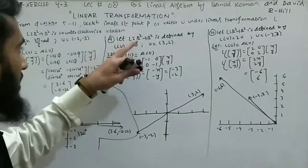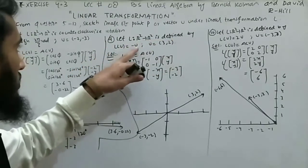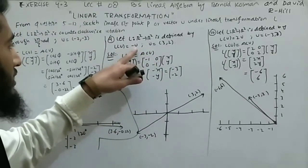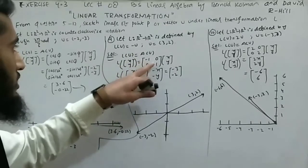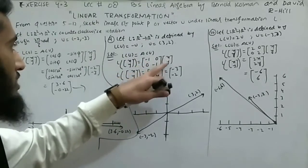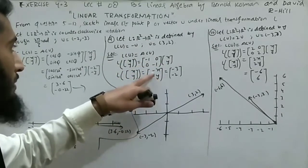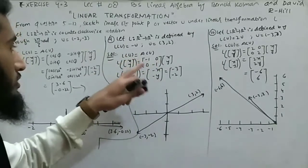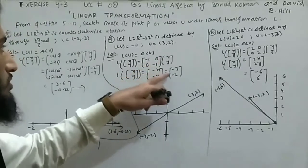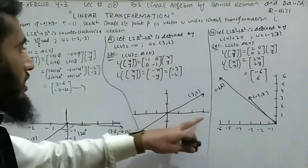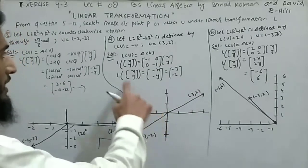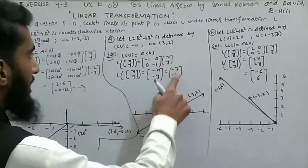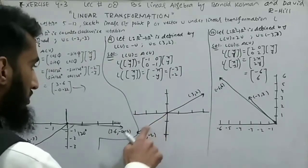Question 9: L from R² to R² defined by L(u) = -u, while u = (3, 2). L(u) = Au is satisfied when A = [[-1,0],[0,-1]], since multiplying gives (-x, -y) = -u. The initial point is (3, 2) and the required image is (-3, -2), which lies in the third quadrant.